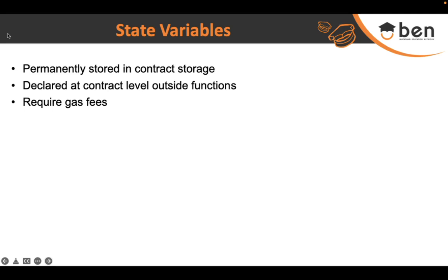As owners of smart contracts, we have to pay a gas fee. The amount of gas your smart contract uses depends on the number of state variables you have declared, among other factors. Since state variables are stored on the blockchain permanently, that's why they require gas fees.